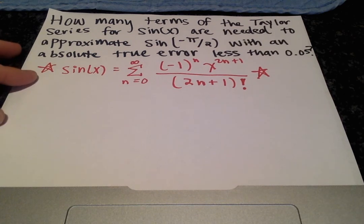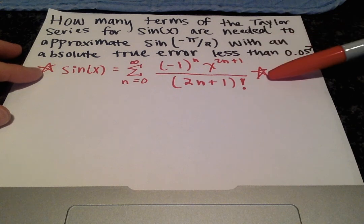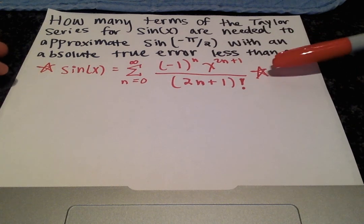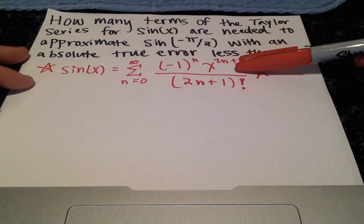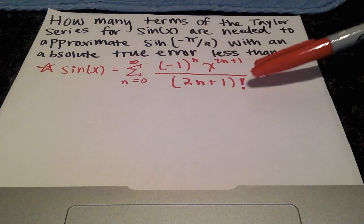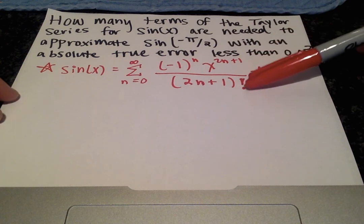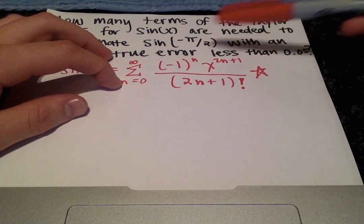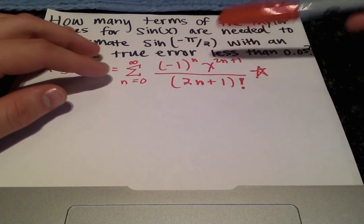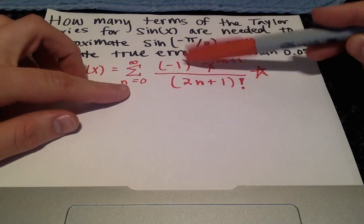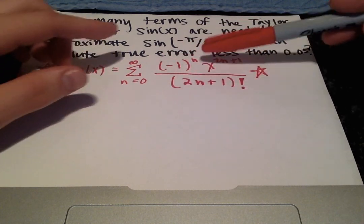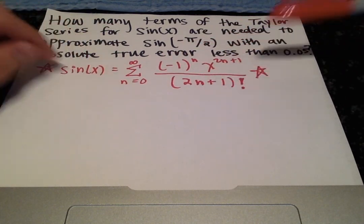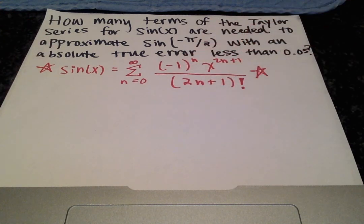We're given a formula which enables us to calculate each term of the Taylor series by plugging in n values. You start with n equals 0 to get the first term, then plug in n equals 1 to get the second term, and so on.